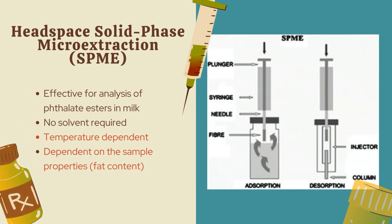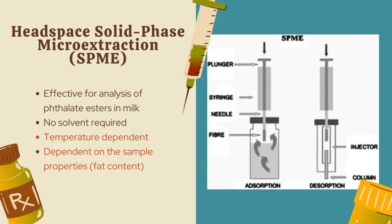Next, we look at headspace SPME or Solid Phase Microextraction. This method does not require any solvents. The apparatus consists of a fused silica tube coated with a suitable stationary phase, attached to a modified microsyringe. Coupled with the static headspace method, it is used for milk sample preparation to analyze phthalate esters. Volatile components are trapped in the SPME fibre in the headspace above the sample after heating. This method depends on fat content and uses standard addition and internal standard approaches for quantitation. Results are also highly temperature-dependent, as high temperature causes volatile analytes to favour the vapour phase, resulting in less deposition onto the fibre.